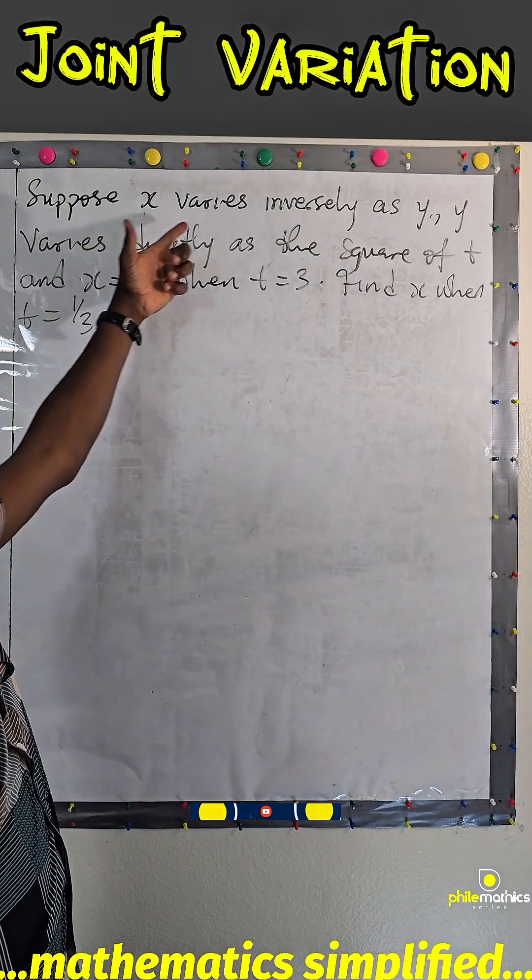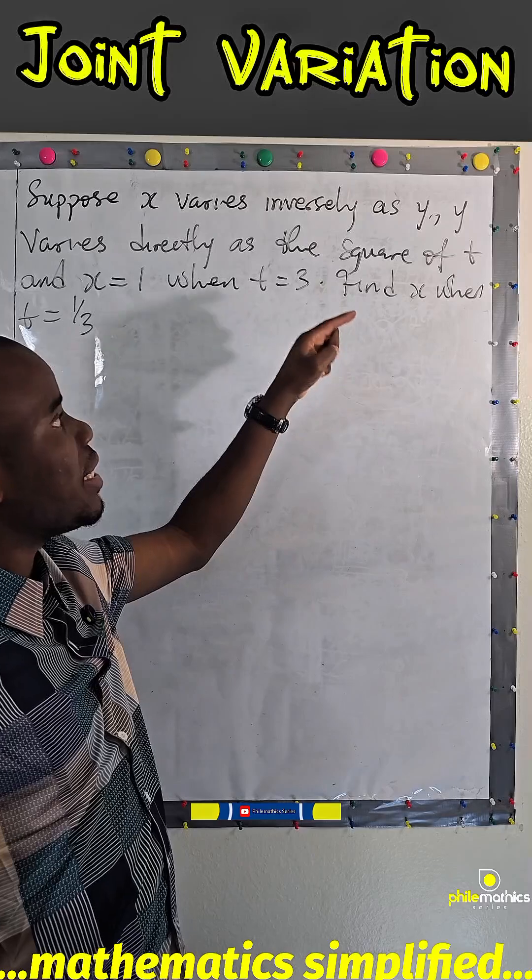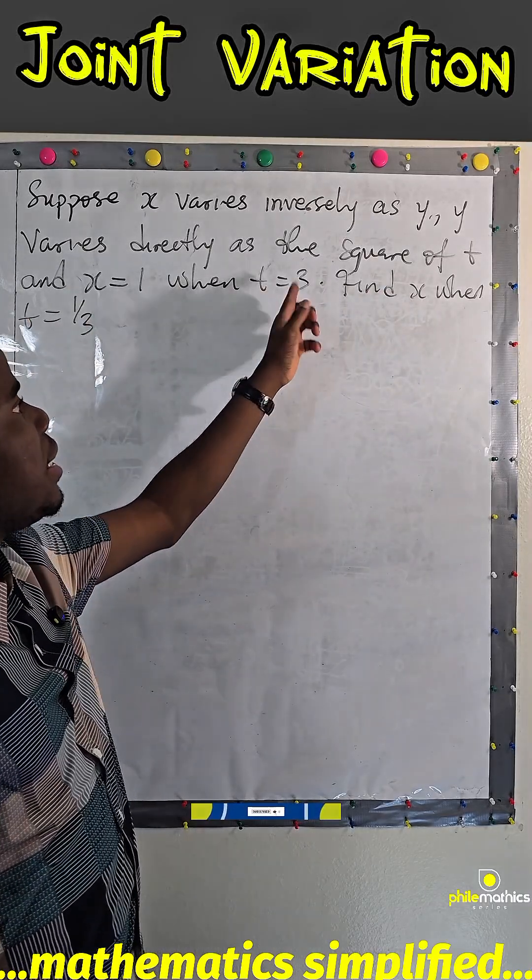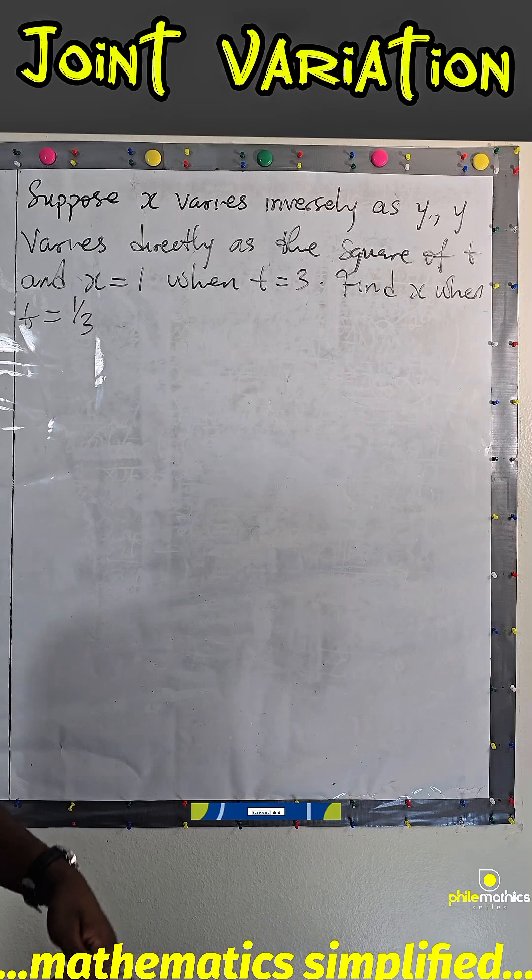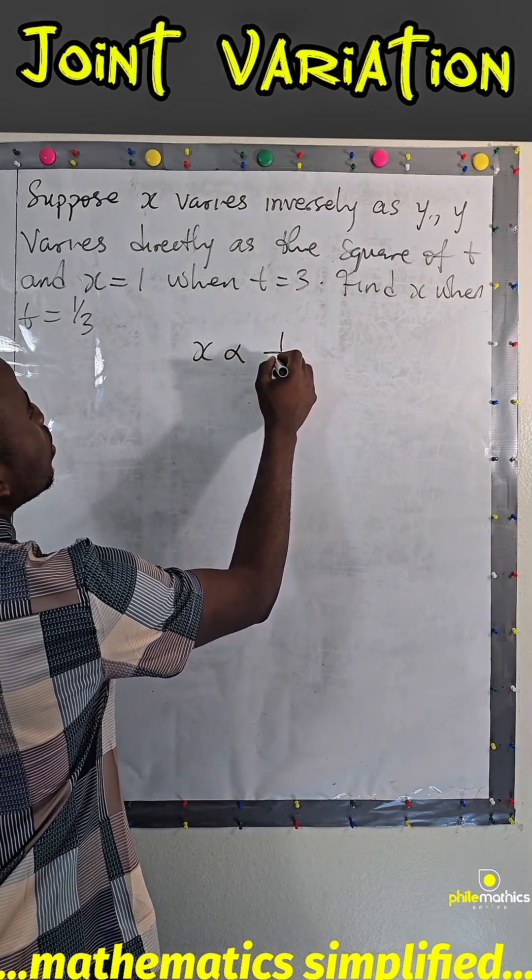We are told that suppose x varies inversely as y, and y varies directly as the square of t. Also, x is 1 when t is 3. Find x when t is 1 over 3. So x varies inversely with y.